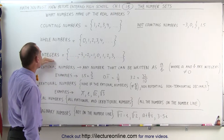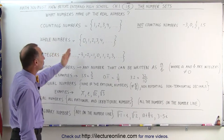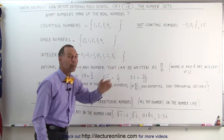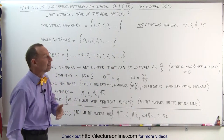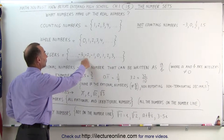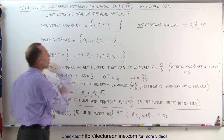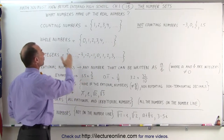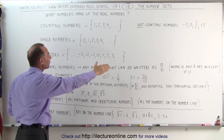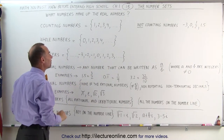When we go to the integers, they include all of the whole numbers — notice from 0 on to the right — but also the negative equivalents: negative 1, negative 2, negative 3, all the way to negative infinity. So all the numbers from negative infinity to positive infinity, one number at a time.